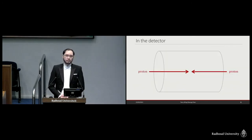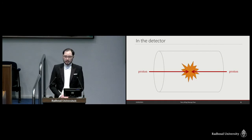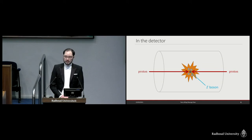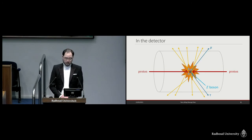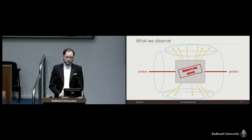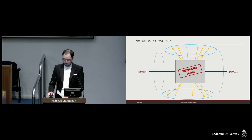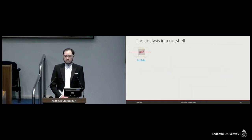So in the detector, protons are made to collide with each other. These collisions are so energetic that new particles could be produced in the process, and among these particles, some of them could be the Z bosons that we are interested in. These particles could decay into other final particles that actually reach our detector, and among those, there could be the leptons coming from the Z boson decay. However, what we can actually observe are just the final particles that reach our detector, and what actually happens at the collision must be inferred by careful analysis.